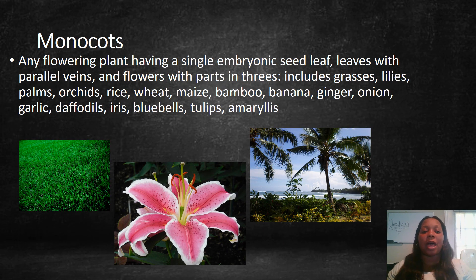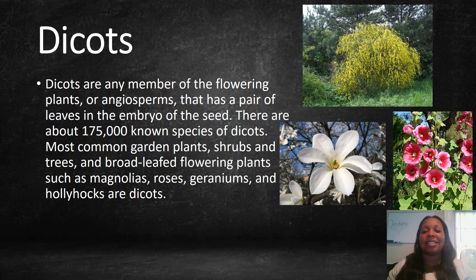Monocots are any flowering plant having a single embryonic seed leaf, leaves with parallel veins, and flower parts in threes. These include grasses, lilies, and palm trees. Dicots are any member of the flowering plants, or angiosperms, that has a pair of leaves in the embryo of the seed. There are about 175,000 known species of dicots. The most common are garden plants, shrubs, and trees.